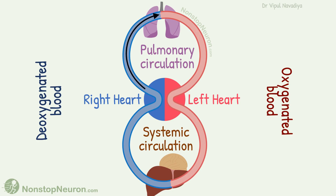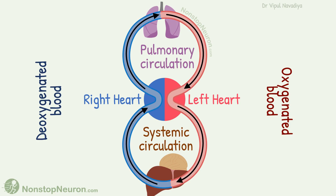From the right heart, blood goes to the lungs to get oxygenated. Then it comes back to the left heart and gets pumped into the systemic circulation. Here it unloads the oxygen and returns to the right heart. This loop keeps repeating until you die.